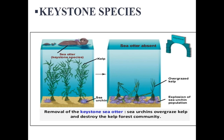Another example would be sea otters. When sea otters are present, kelp can grow and sea urchins are kept in check because sea otters eat them. If we remove sea otters, sea urchins will grow too much and will eventually ruin the kelp, leading the ecosystem to collapse. That is why sea otters are a keystone species — they maintain the balance.